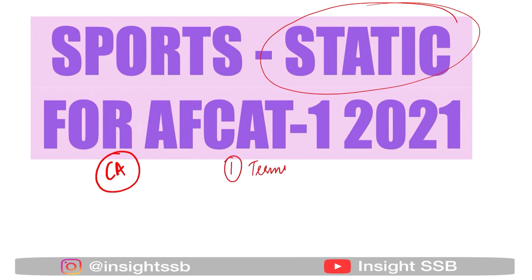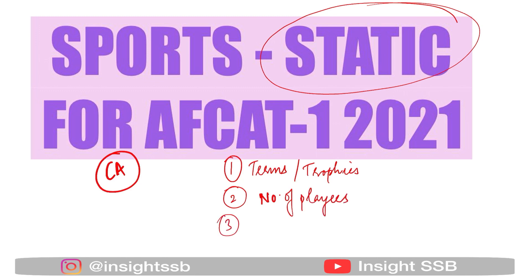The types of questions asked include: terms and trophies — direct questions come from these — and the number of players in a sport. Direct sports-related questions also appear, such as when the Commonwealth Games were held, when they were first held in India, what medals India won, and the location — past and upcoming venues — which is very important.